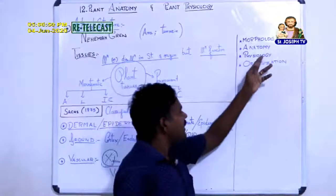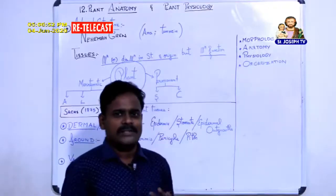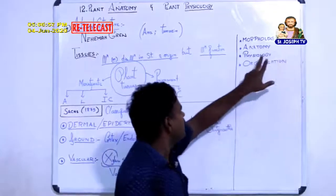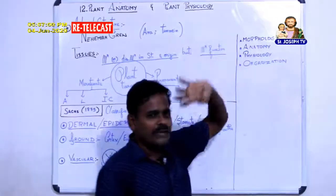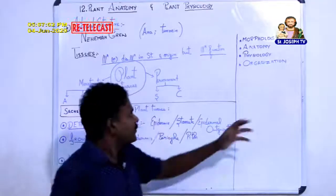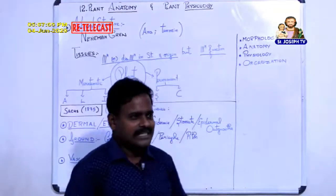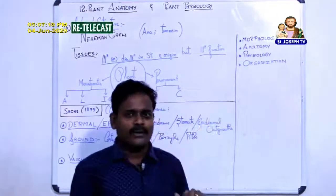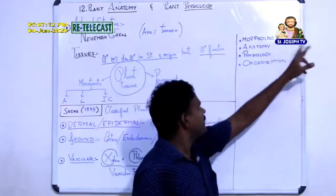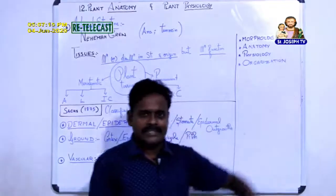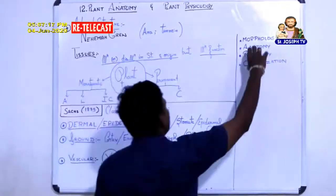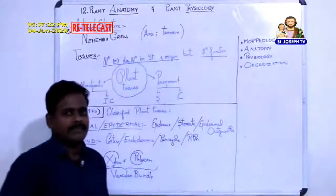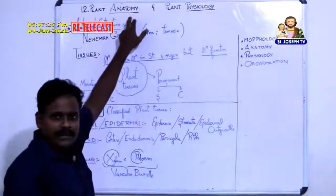The study of vital functions is called physiology. External structure is morphology, internal structure is anatomy, and the functions together are called physiology. In this lesson you are going to learn about plant anatomy — the internal structure of plants — and plant physiology, which covers important functions.